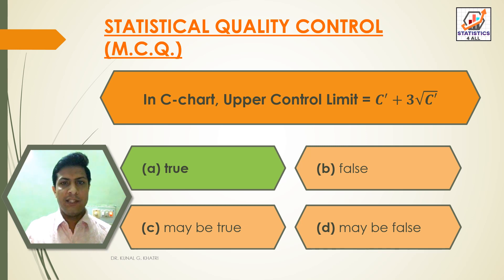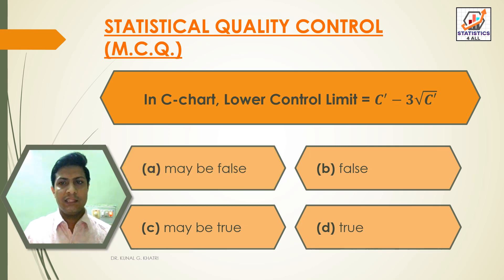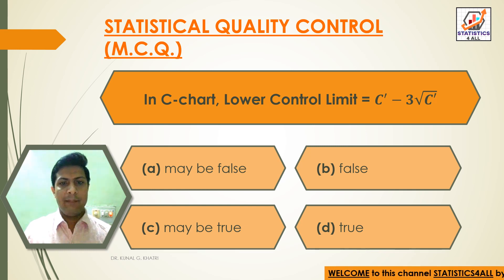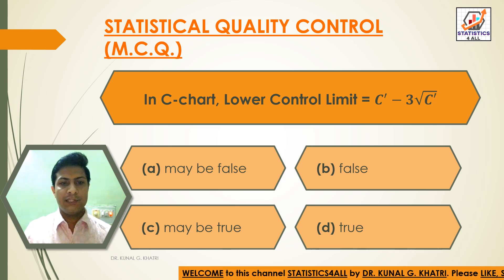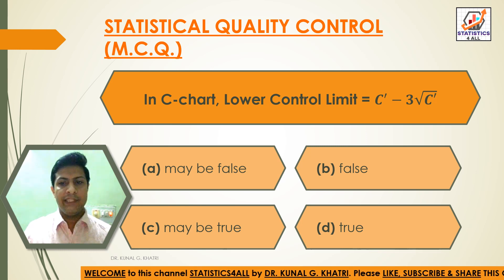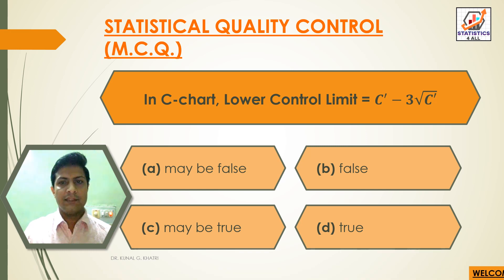Next question: in C chart, lower control limit is equal to C dash minus 3 root C dash. Option A: may be false, Option B: false, Option C: may be true, Option D: true. Answer: Option D — true. In C chart, lower control limit is equal to C dash minus 3 root C dash.